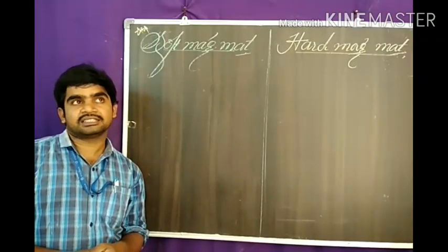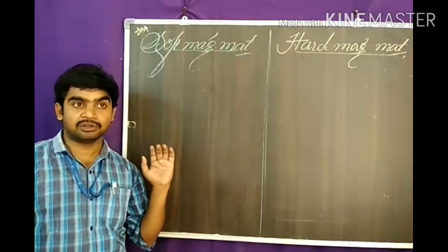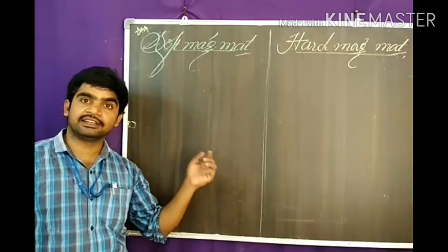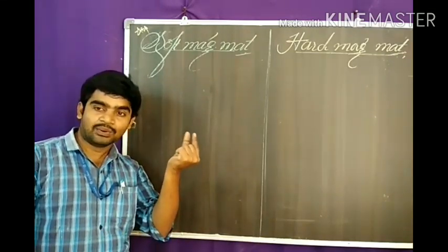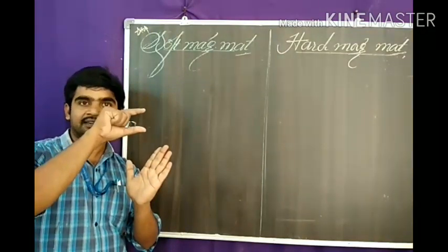Soft magnetic materials have a small area of the hysteresis loop. Permeability and susceptibility values are large. Coercivity and retentivity are small values because of the low hysteresis curve.